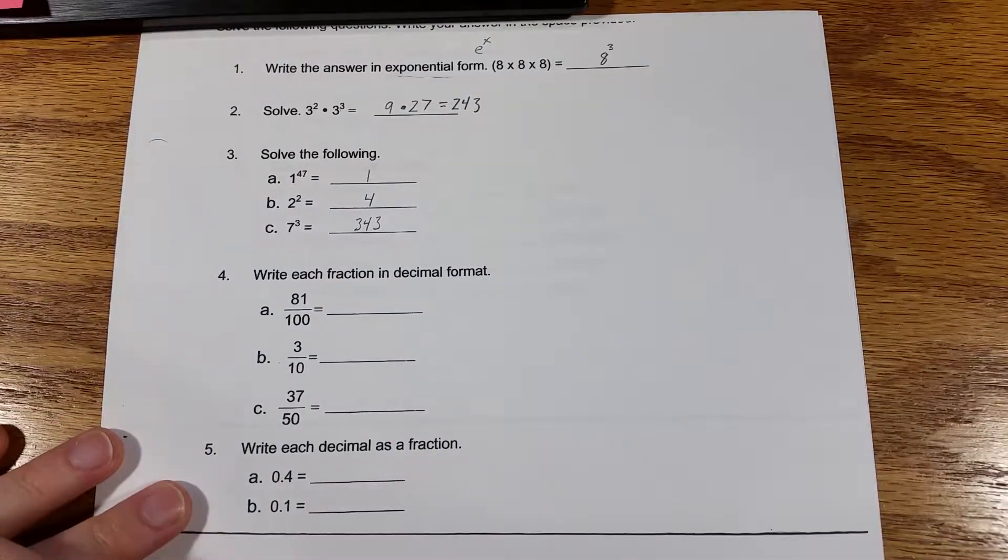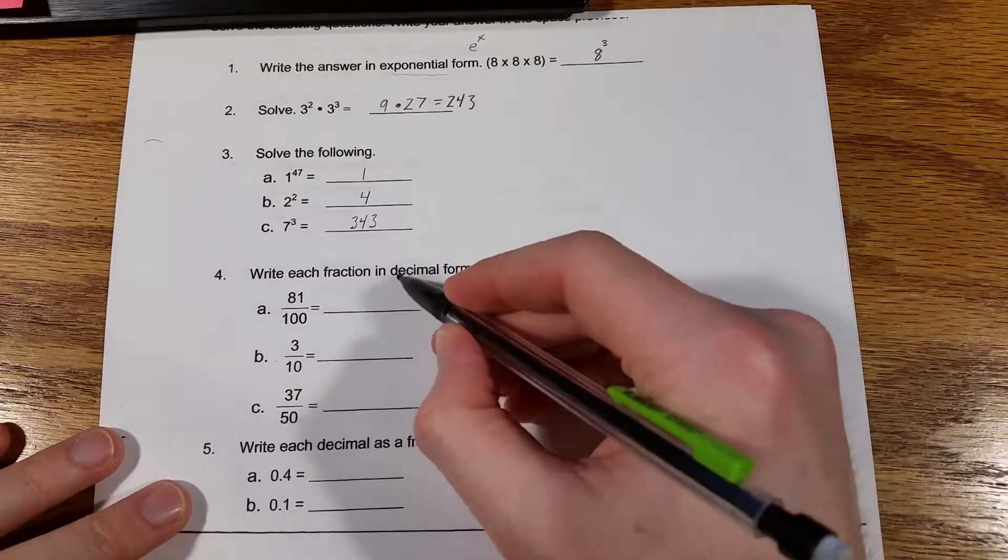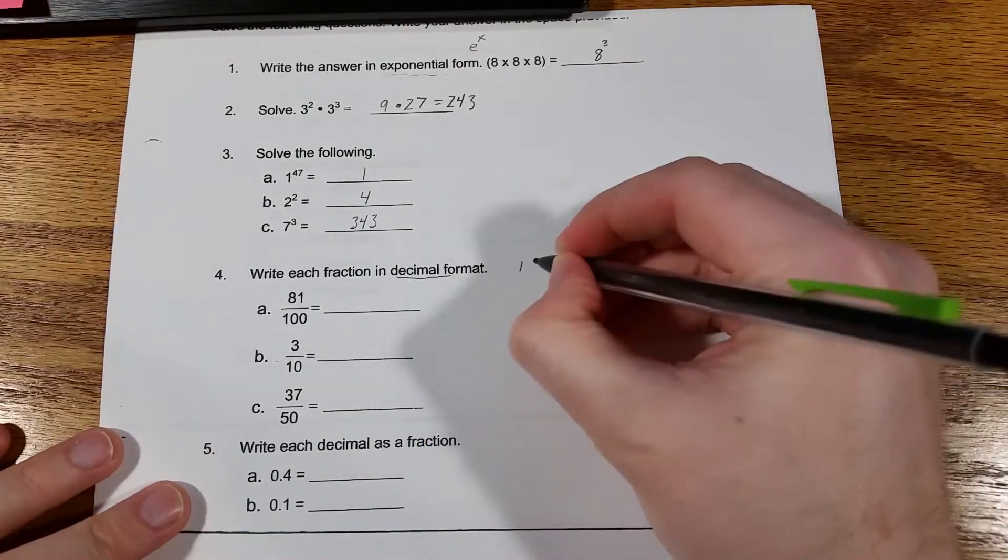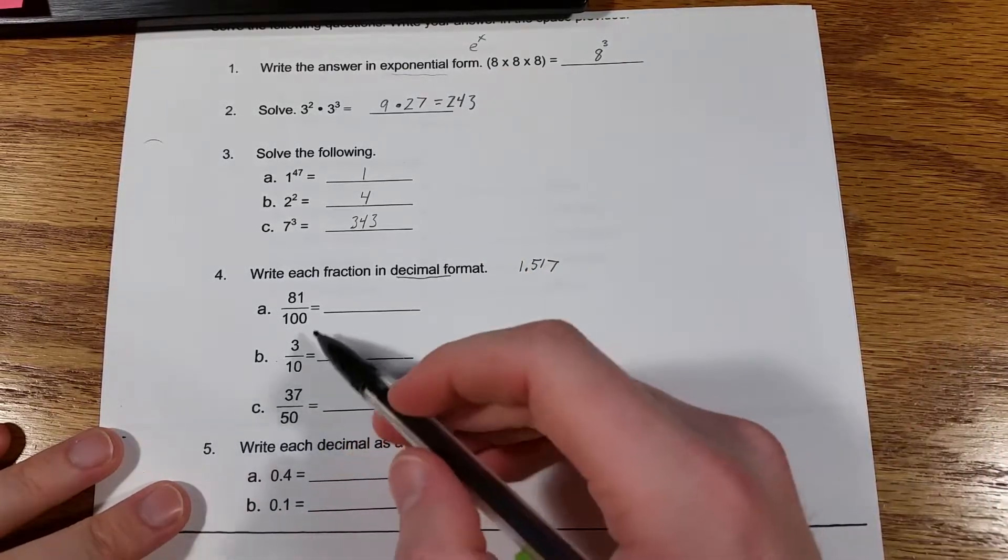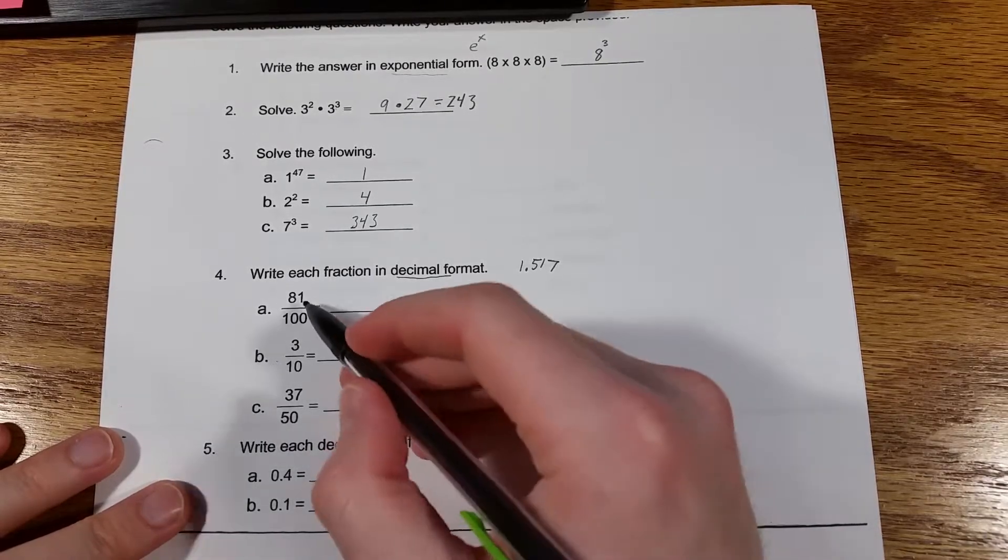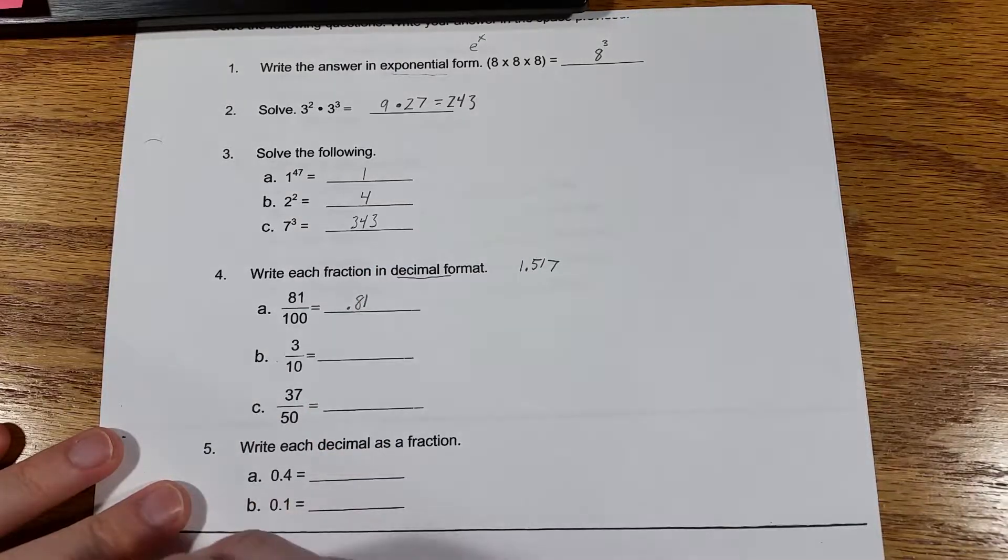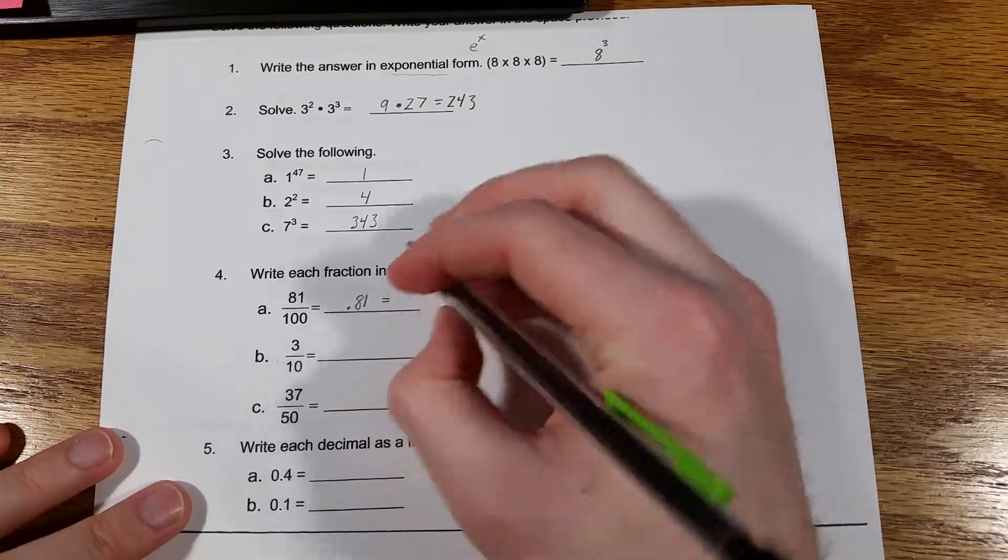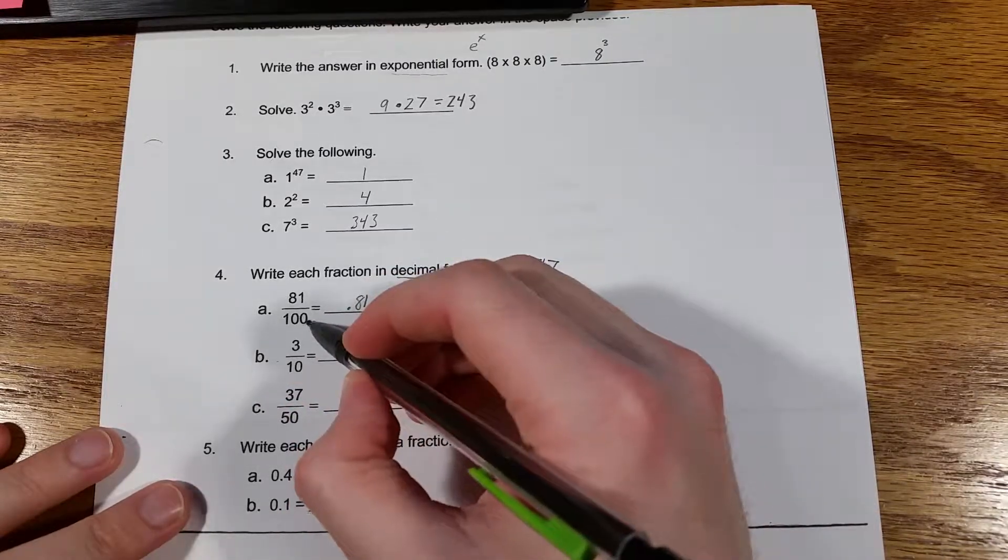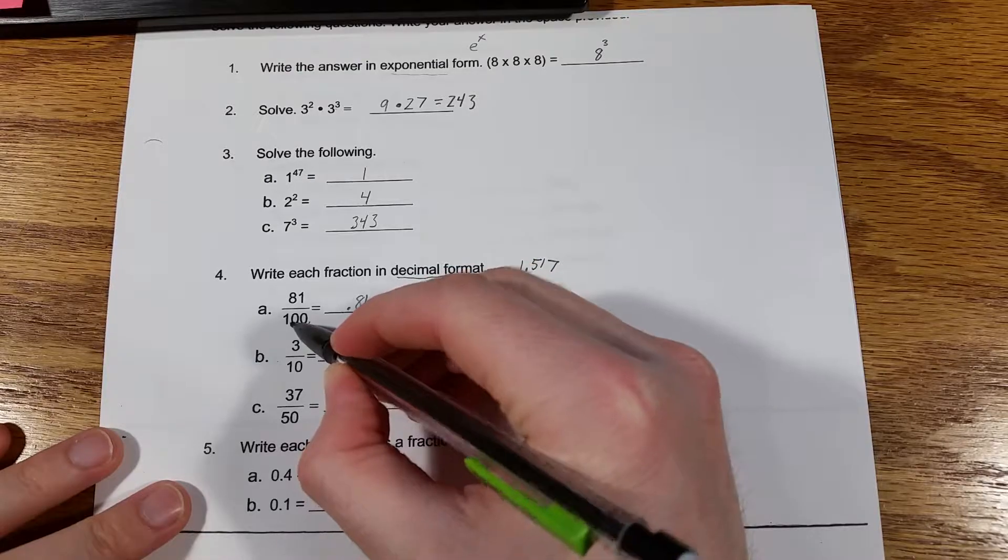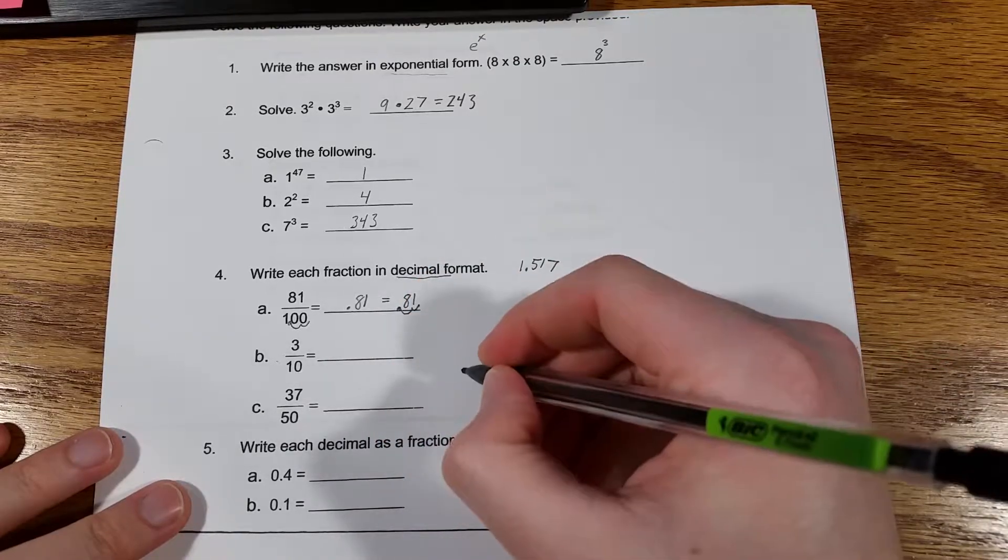Number four, write each fraction in decimal format. So decimal format just means something like 1.517 with a decimal place instead of fraction form, like these are shown. So 81 divided by 100, that would be 0.81. And if you wanted to see that broken down, if you start with 81, since you have two zeros here in 100, you would just move this over 2 decimal places to get 0.81.